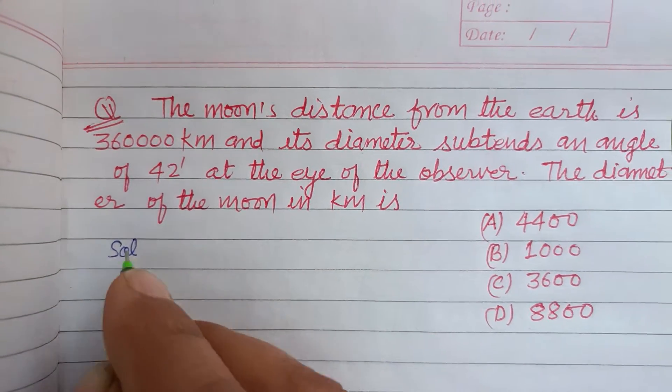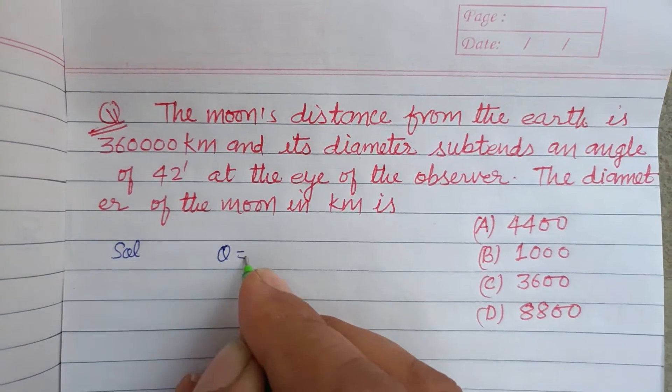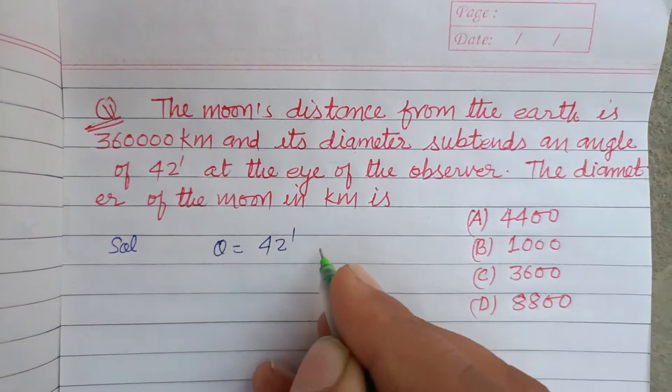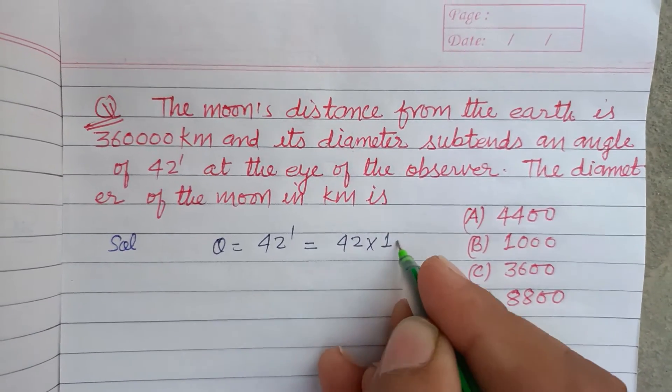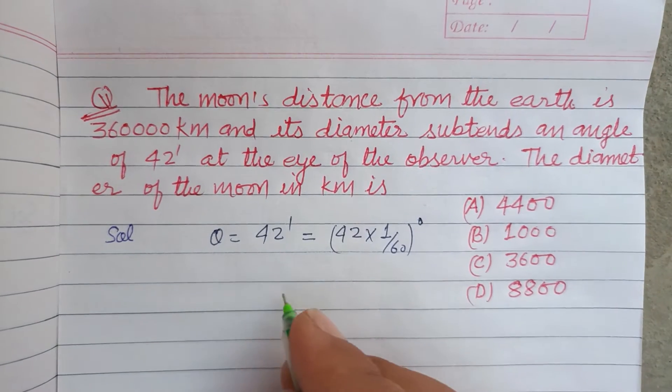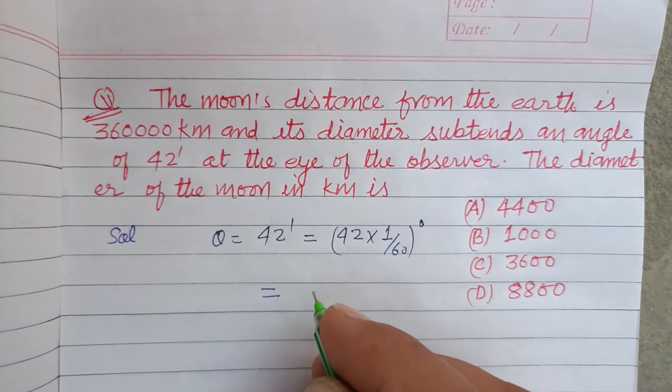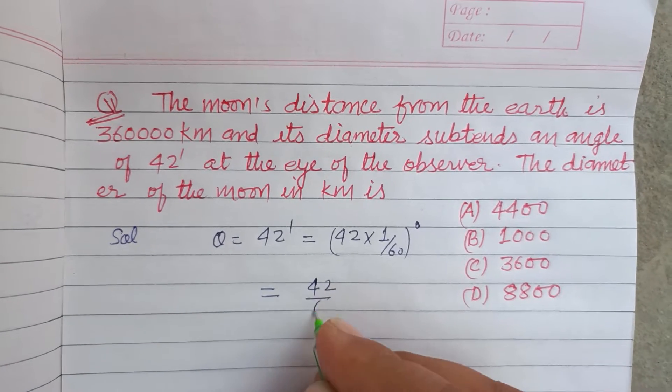So students, here the angle is given: theta is given to us as 42 minutes. So we change it into degrees by dividing it by 60, so it is 42/60 degrees. Now we also change it to radians, so 42 over 60 into π upon 180.